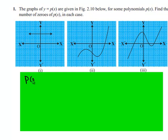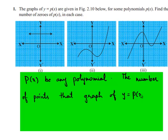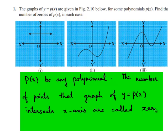Let p of x be any polynomial. The number of points that the graph of y is equal to p of x intersects the x-axis are called zeros of the polynomial p of x.